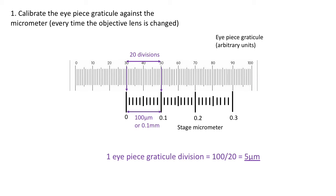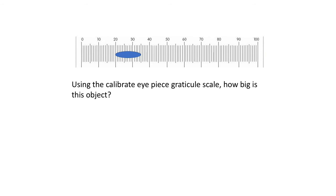Let's look at an example. I'm showing a blue object - could be a cell, could be anything - lined up against the divisions on the eyepiece graticule. We know that one eyepiece graticule scale is 5 micrometers from the previous calibration. Our object here is equal to 15 divisions from 20 to 35, so 15 multiplied by 5 micrometers means our object is 75 micrometers in length.